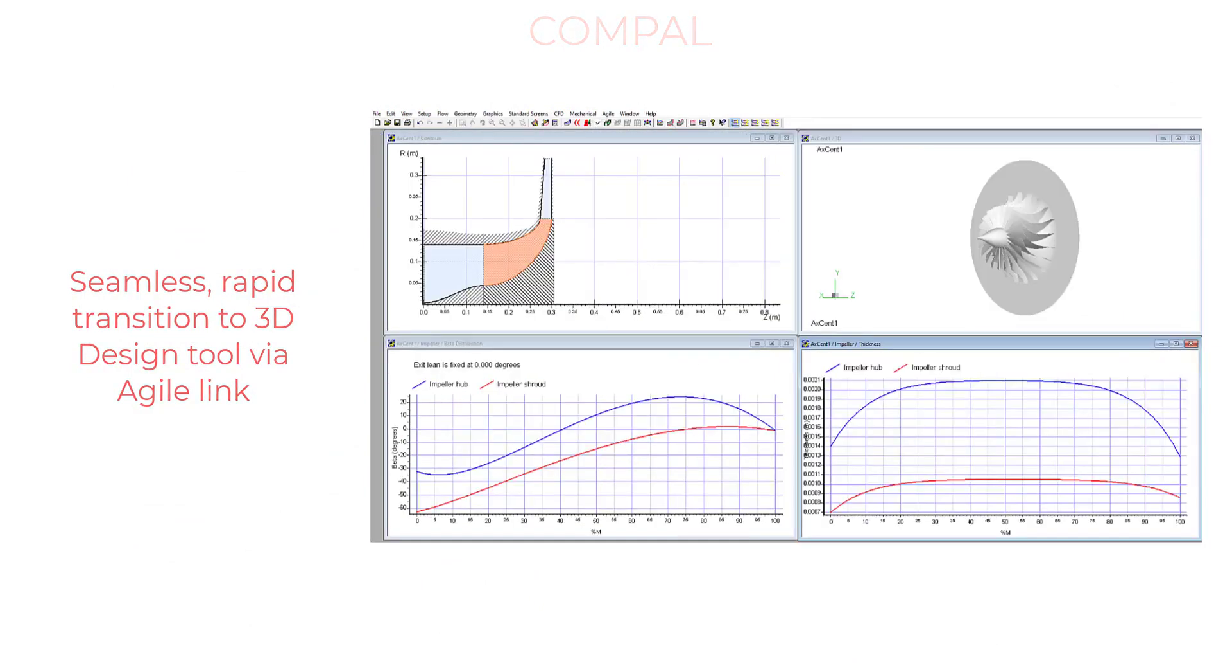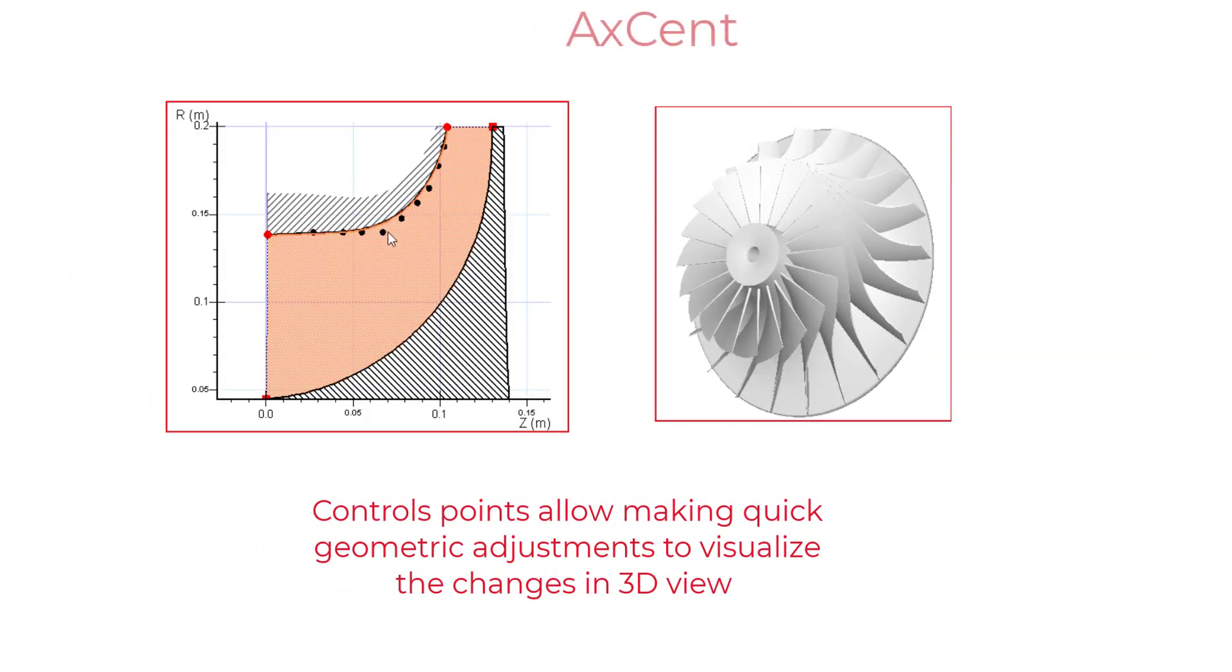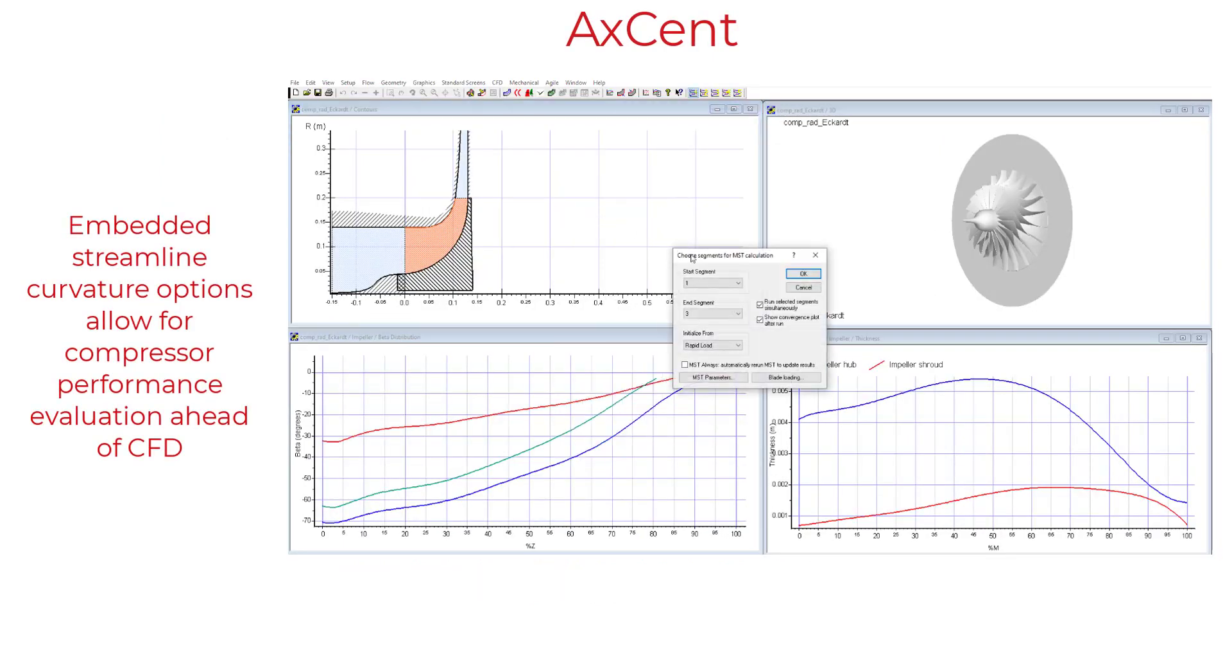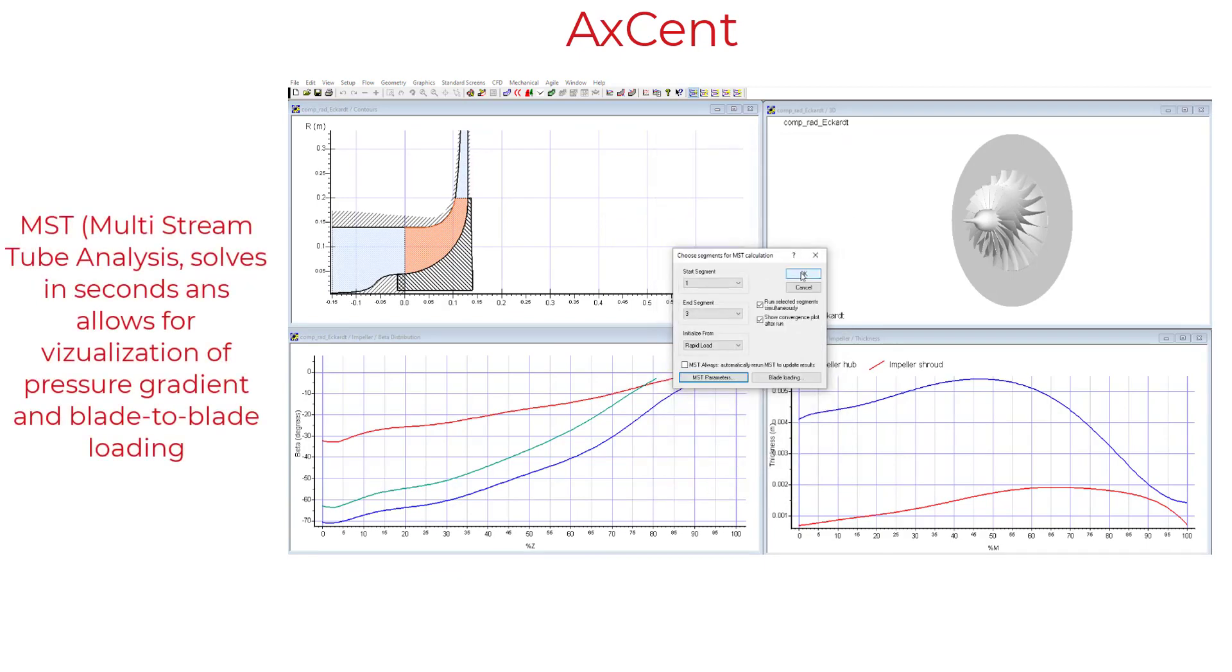Once we're happy at 1D, we can seamlessly transition with our Agile link into the 3D design world with Accent, where we can make any 3D changes we'd like to the blade using either control points or Bezier distributions.